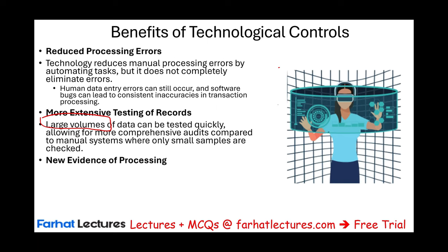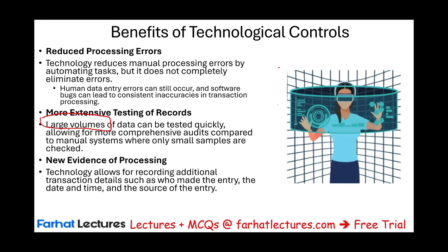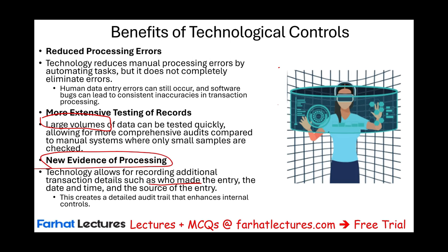Technology also introduces new evidence of processing. Technology allows recording additional transaction details, such as who made the entry, at what time, the date, and the source of the entry. When you capture something electronically, it captures the exact second that information was recorded. If you look at your receipt, it tells you what time the store made the sale, the amount, who made the sale, the product, and the person who served you — giving you new evidence of processing and additional information that's very helpful for keeping track of what's happening.